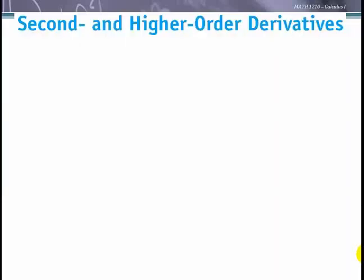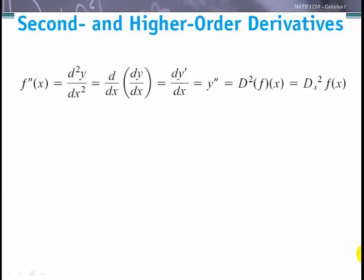We're going to talk about second and higher order derivatives. A second derivative is noted as f double prime of x, or in Leibniz notation it's d²y/dx². This is just notation meaning the second derivative. We can also take the Leibniz notation for the first derivative, dy/dx, and say d by dx of that.